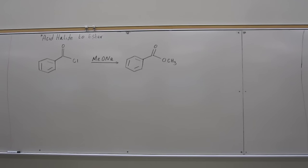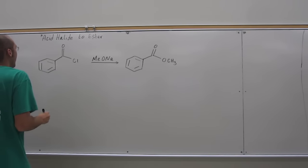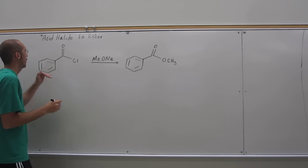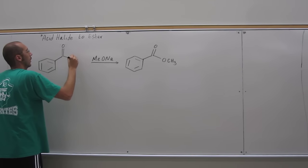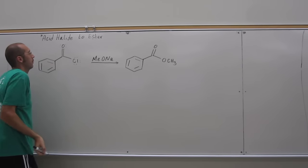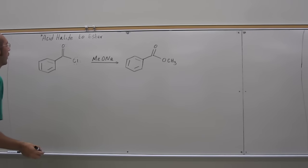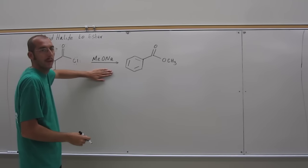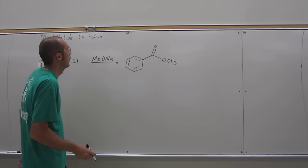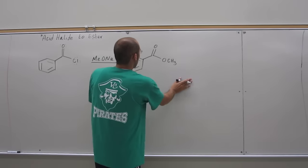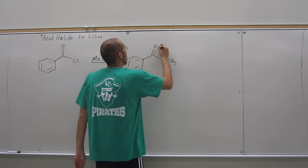Okay, so we're going to do a mechanism for the reaction of an acid halide to produce an ester. In this case, we're going to react benzoyl chloride with sodium methoxide to produce the ester, the methyl ester.